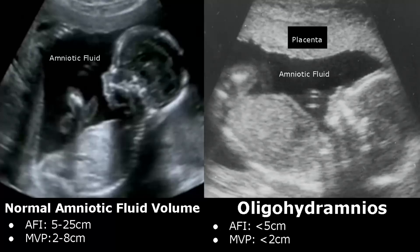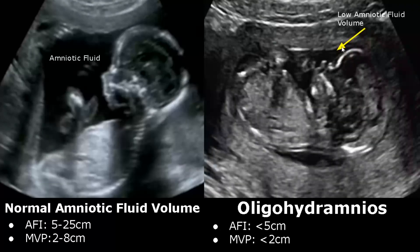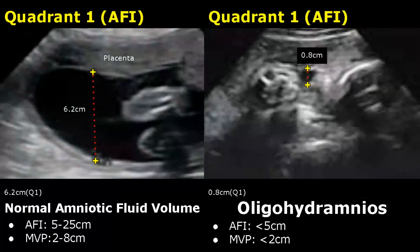Here is another image showing Oligohydramnios. There is a reduced amount of fluid around the fetus. Now we will compare normal fluid levels with Oligohydramnios using the Amniotic Fluid Index method.